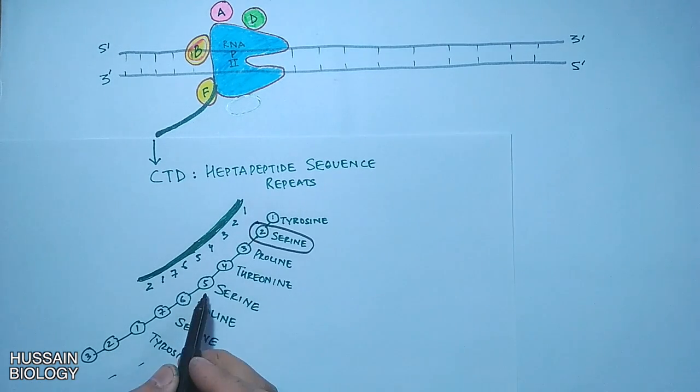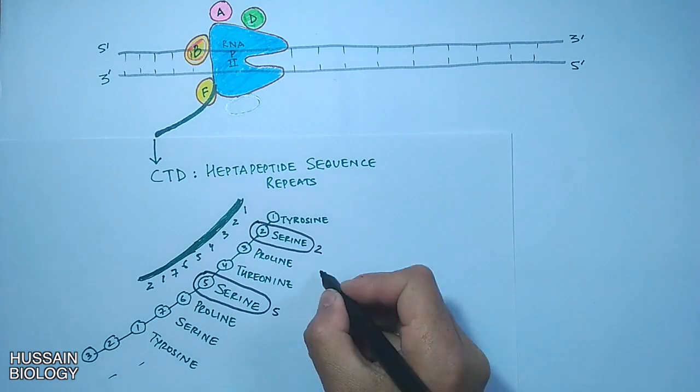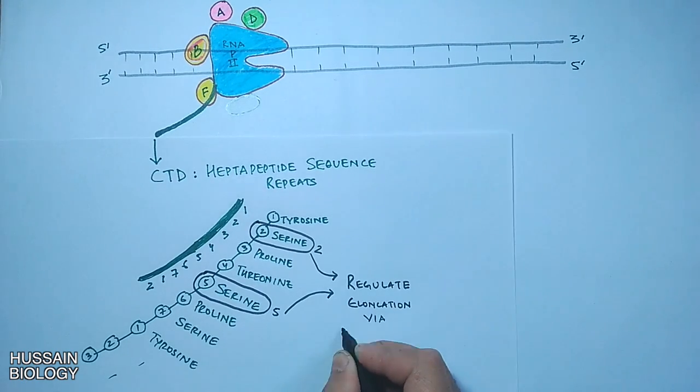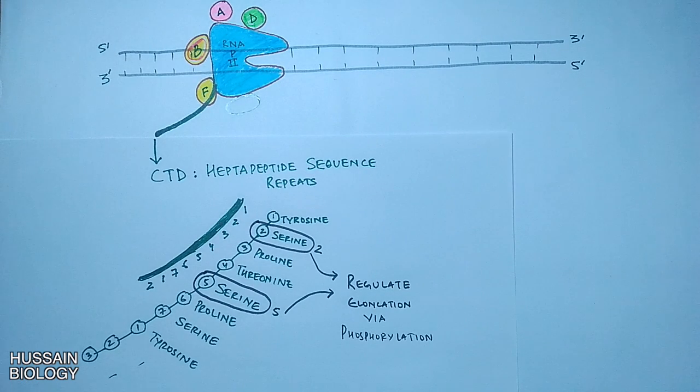It's these two serine amino acids at second and fifth position that can regulate the elongation through phosphorylation, which we will see later on how they regulate the transcription.